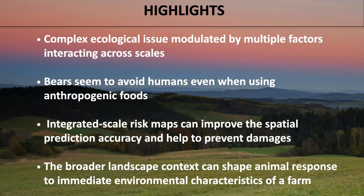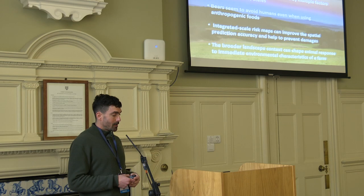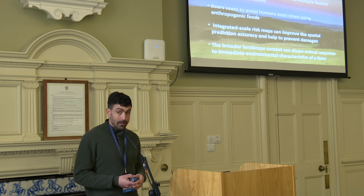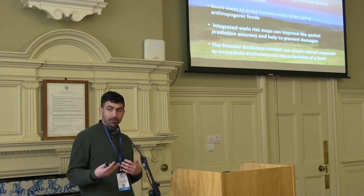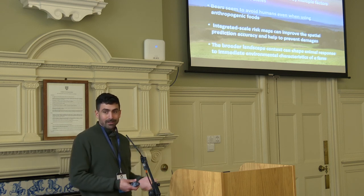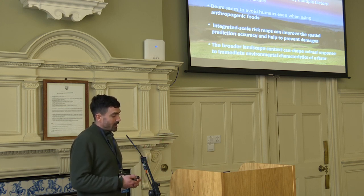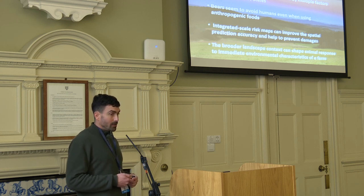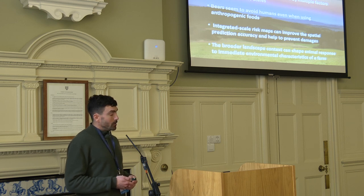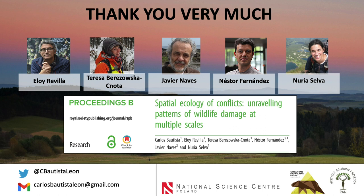To wrap up, the highlights: wildlife damage occurrence is a complex ecological issue modulated by multiple factors interacting at different scales. Bears seem to avoid humans even when using anthropogenic food sources, which we argue is due to a trade-off between fear and fitness. We show that scale-integrated risk maps can improve spatial prediction accuracy and help prevent damage, and that the broader landscape context shapes animal response to the immediate environmental characteristics of a farm.